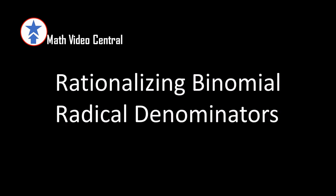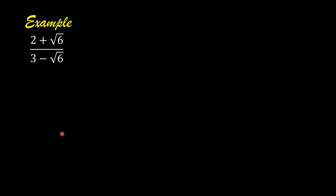Today's lesson is Rationalizing Binomial Radical Denominators. Our example is: 2 plus square root of 6 over 3 minus square root of 6. Let us rationalize the denominator.